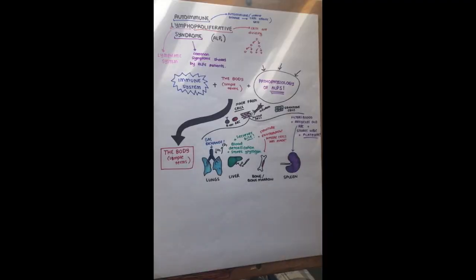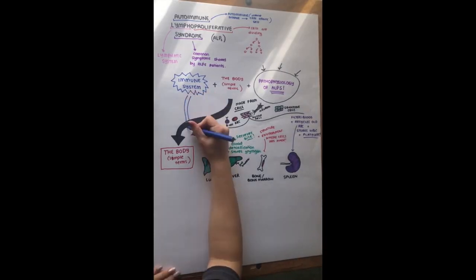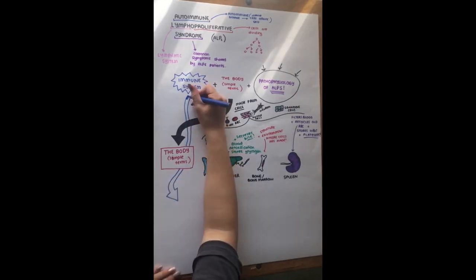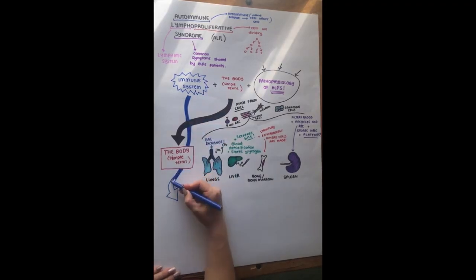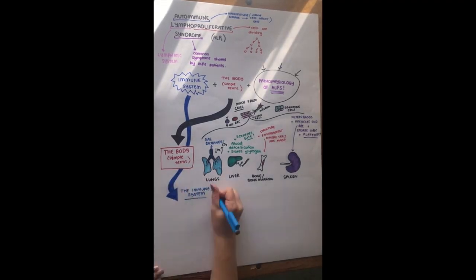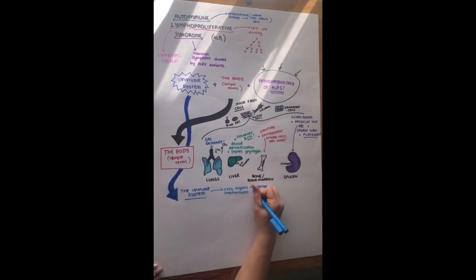Now I've gone over what makes up these organs and their basic functions. I can now touch over the immune system so that we have a basic idea of what it does. So the immune system is really important because it is basically a mechanism of mechanisms, cells and organs that protect our body and defend us.